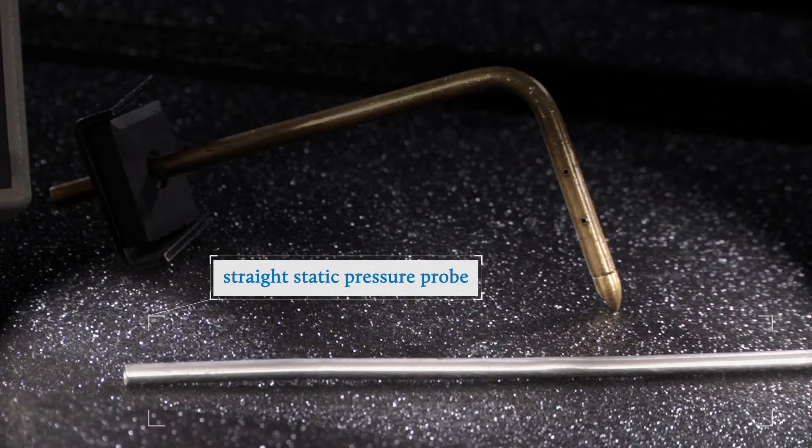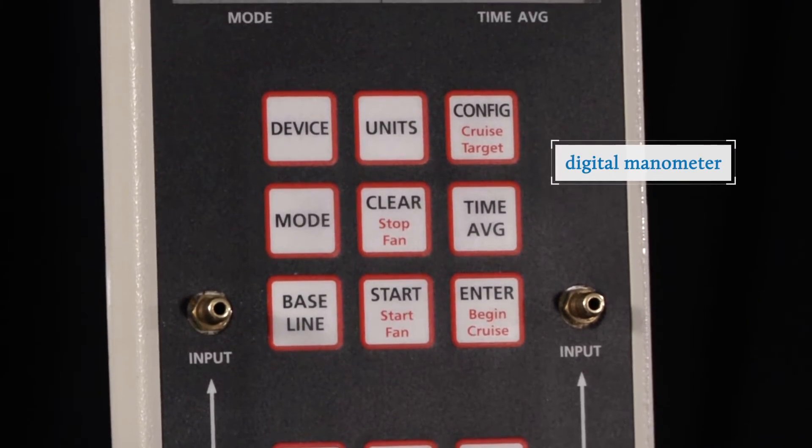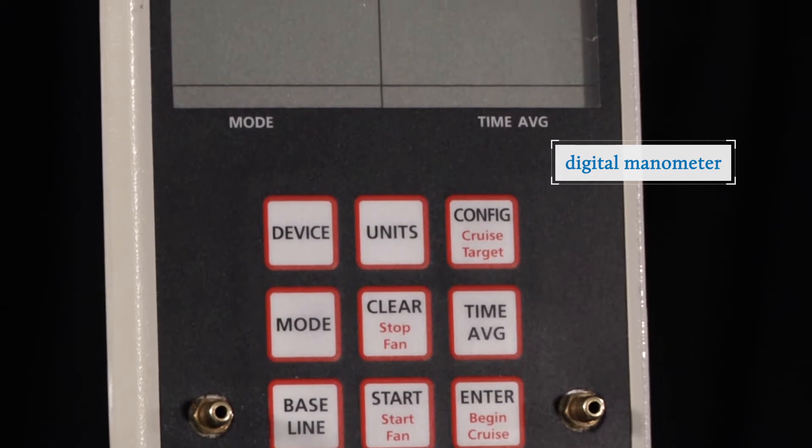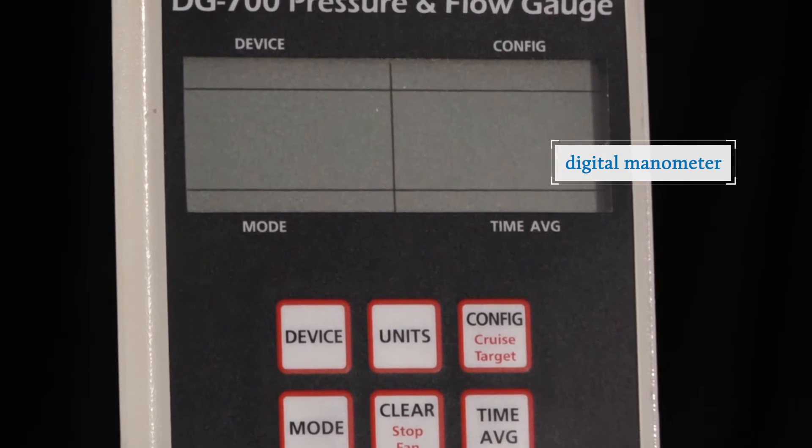In either case, the static pressure probe will be connected to a digital manometer using plastic tubing. A digital manometer is a fast, accurate way to measure the static pressure.